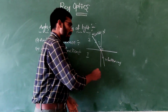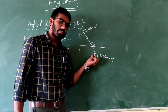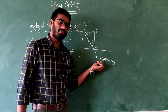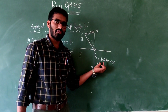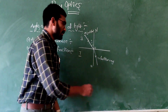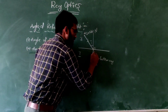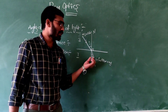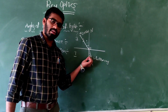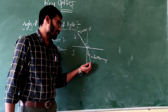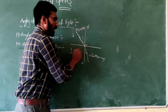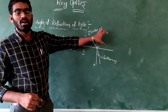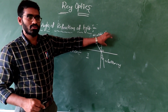Similarly, the angle between the normal line and the refracted ray is called the angle of refraction. These are the angles involved in the refraction of light.